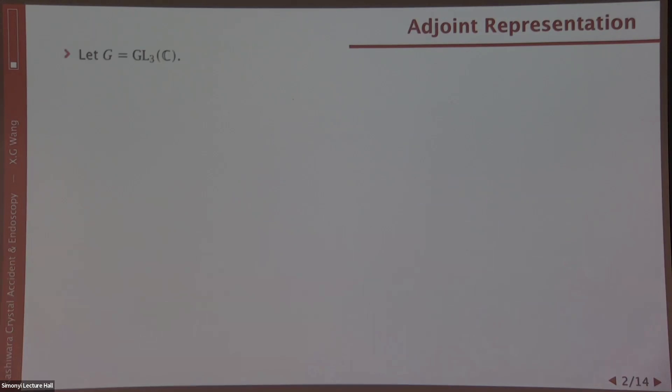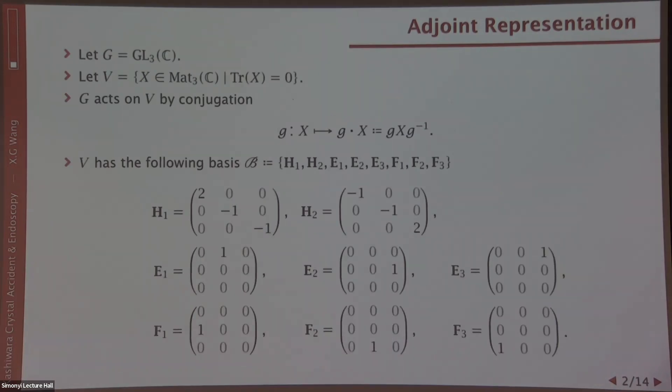Let's look at G, the group of 3 by 3 invertible matrices, and the vector space V of 3 by 3 trace zero matrices. G acts on V by conjugation. V has the following basis: two diagonal matrices and the others are elementary matrices. I denote it by script B. I chose these spaces because if we look at the diagonal matrix action in G, this basis consists of eigenvectors. This is the first step towards analyzing any G representation.